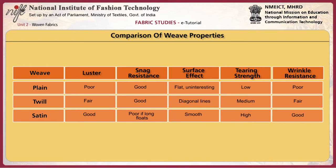The displayed chart shows the properties of each type of weave. Plain weave has poor lustre, good snag resistance, a flat and uninteresting surface effect, low tearing strength and poor wrinkle resistance. Twill weave has fair lustre, good snag resistance, diagonal lines on the surface, medium tearing strength and fair wrinkle resistance. Satin weave has good lustre, poor snag resistance, a smooth surface, high tearing strength and good resistance to wrinkles.